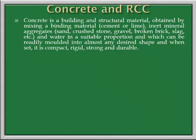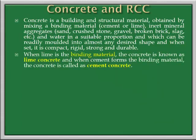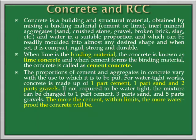Now we move to concrete and RCC. Concrete is a building and structural material obtained by mixing a binding material (cement or lime), inert aggregates like sand, crushed stone, gravels, broken brick, etc., and water in suitable proportions, which can be readily molded into almost any desired shape, and when set is compact, rigid, strong and durable. When lime is the binding material, it is known as lime concrete; when cement is the binding material, it is called cement concrete. The proportion for watertight works is 1 part cement, 1 part sand, and 2 parts gravel. If not required, it can be 1 part cement, 3 parts sand, and 5 parts gravel. More cement within the limits means more waterproof concrete.